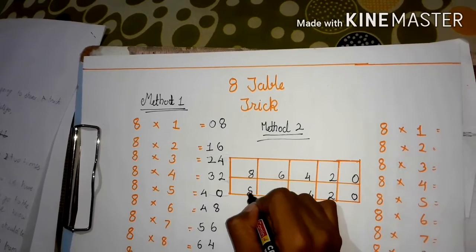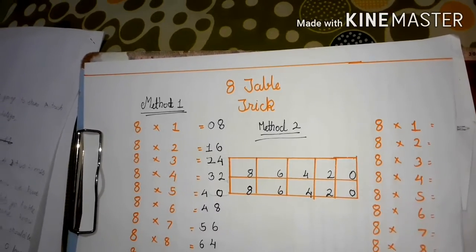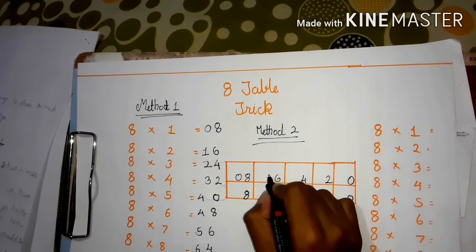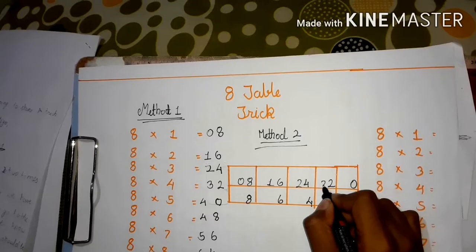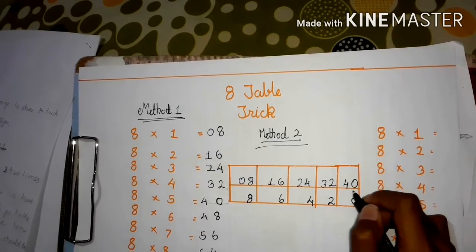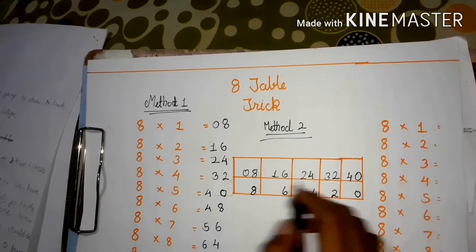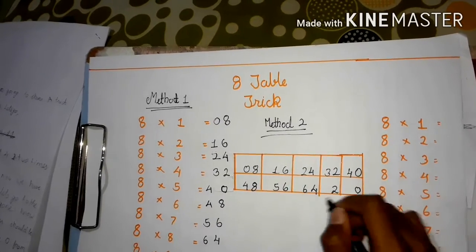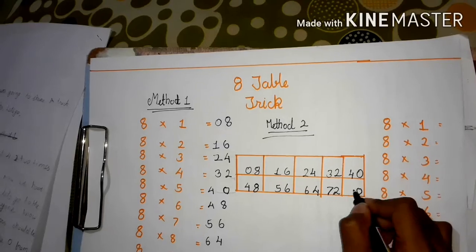Now write 0, 1, 2, 3, 4. Write the 4 again: 1, 2, 3, 4, 5, and 8.